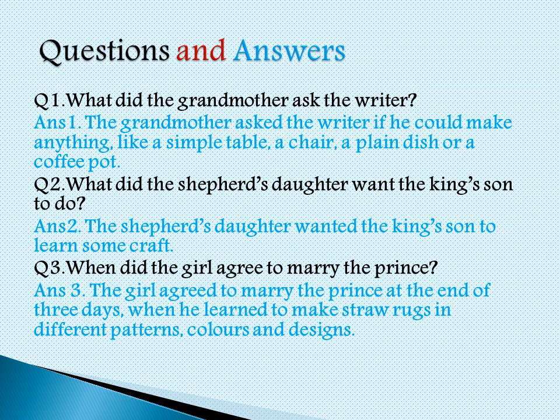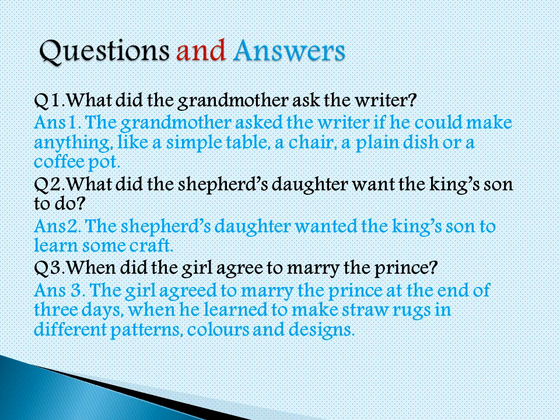Question 2: What did the shepherd's daughter want the king's son to do? The answer is, the shepherd's daughter wanted the king's son to learn some honourable craft. Question 3: When did the girl agree to marry the prince? The answer is, the girl agreed to marry the prince at the end of three days when he learned to make straw rugs in different patterns, colours and designs.